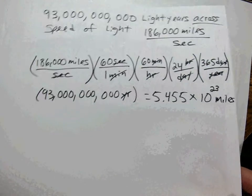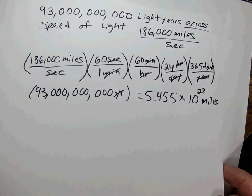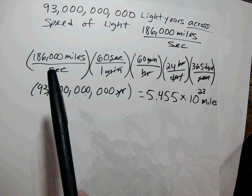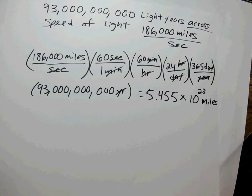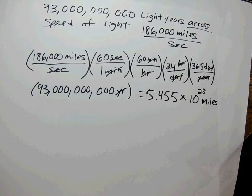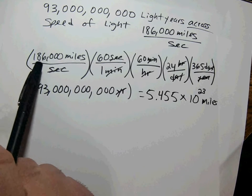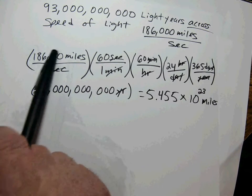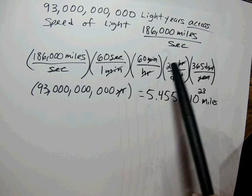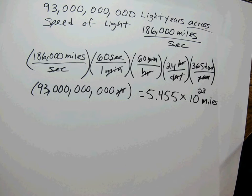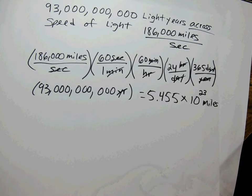We did that calculation of 186,000 times 60 times 60 times 24 times 365 in a previous example. That number is given to us here — it's 5.87 times 10 to the 12 miles. So we didn't need to derive it; we only needed to know the speed of light and do those easy conversions.